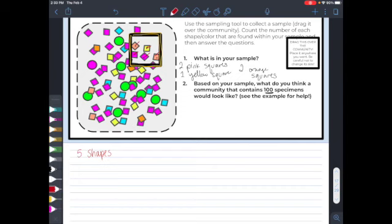The first thing I want to figure out is how many pink squares I would have in a population of 100 based only off of this sample. So in my sample, I have two pink squares out of a total of five shapes. So that's going to give me a sample of two fifths pink squares.